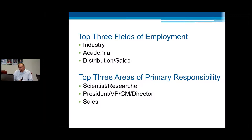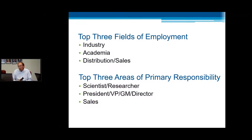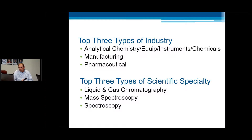Just some information about who the conferees are — the top three fields of employment were industry, academics and universities, and distribution and sales. The top three areas of primary responsibility were scientist/researcher, president/VP/GM/director, and sales. The top three industries include analytical chemistry and equipment, instruments and chemicals, manufacturing, and pharmaceuticals. And the top three scientific specialties are chromatography (liquid and gas), mass spectrometry, and spectroscopy — including vibrational and other forms.